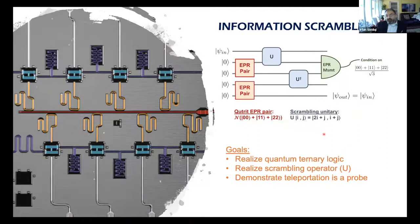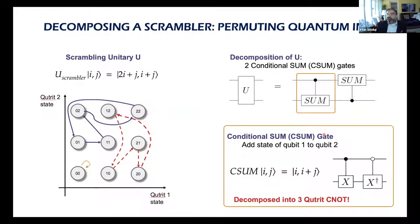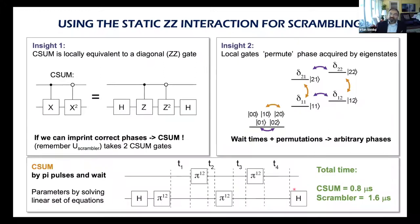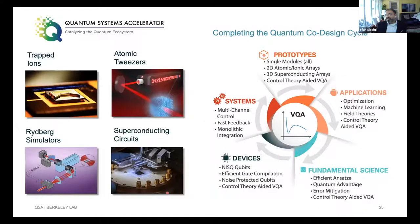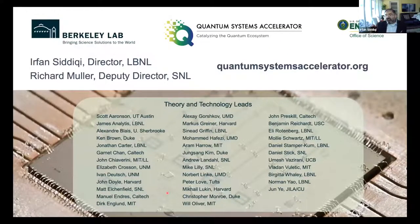Finally, one can even use crosstalk effects to advantage. We recently ran an experiment with qutrits — three-level systems — to simulate information scrambling. The natural gate is a SUM gate moving state i to i+j, but it requires many gate operations. Instead, we used the always-on ZZ interaction as a way to compile the gate itself. This connects to an emerging field of Floquet gate simulations and Floquet gate synthesis.